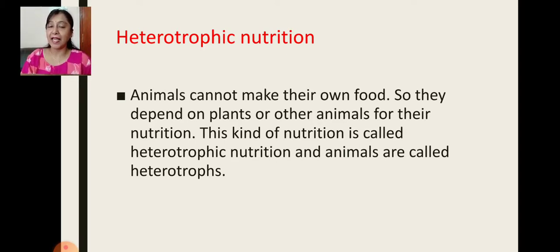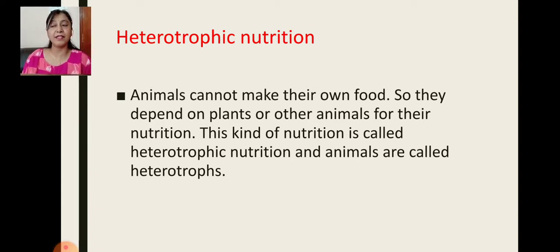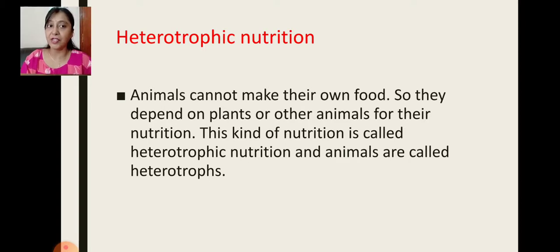Heterotrophic nutrition: animals cannot prepare their own food; they are dependent on plants or other animals to obtain food. This kind of nutrition, in which animals cannot make their own food and depend on other plants or animals, is called heterotrophic nutrition, and such animals are called heterotrophs.